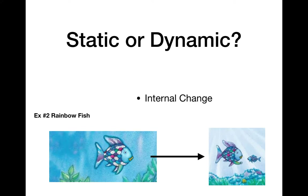The Rainbow Fish would be a dynamic character. Internally, the Rainbow Fish changed — his personality changed, his mindset changed. Instead of being selfish, he chose to be selfless, to be giving. So we would call him a dynamic character.